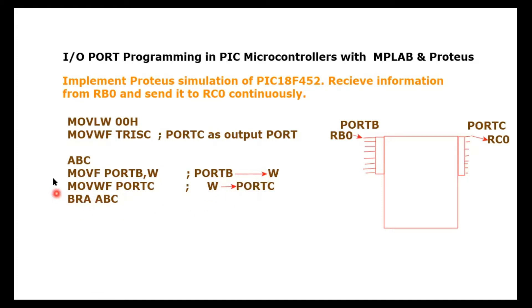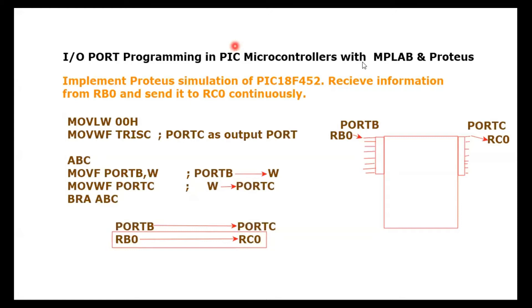We repeat this procedure for an indefinite time interval because we want to continuously send whatever information comes from Port B to Port C, or specifically from RB0 to RC0. This is placed in an infinite loop, which is also true for any embedded system application — whenever the microcontroller turns on it performs its dedicated tasks indefinitely unless turned off.